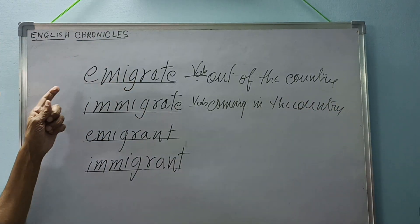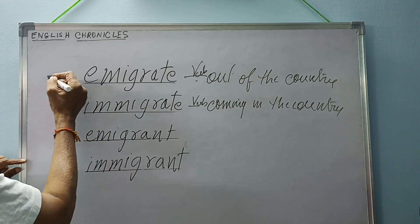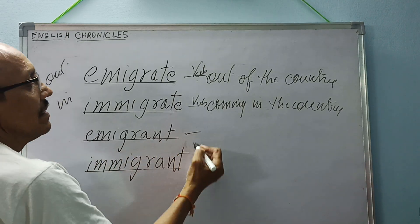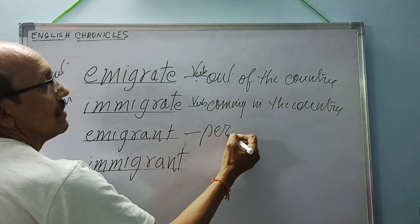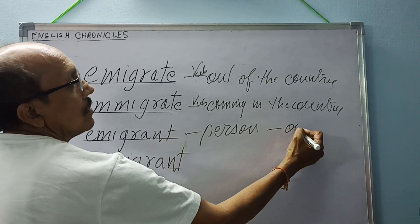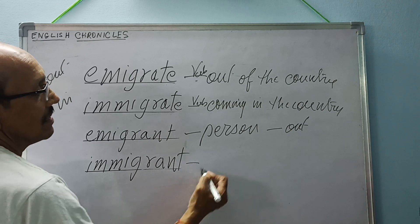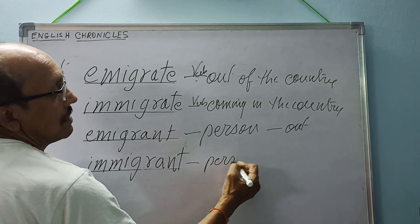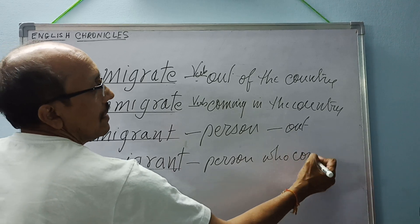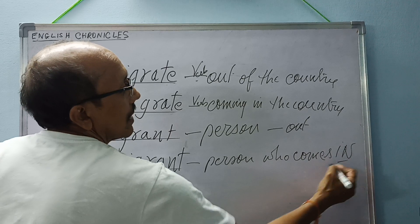So emigrate — 'e' is for out. Immigrate — 'i' is for in. This is out, this is in. An emigrant is the person who goes out, and an immigrant is the person who comes into the country.